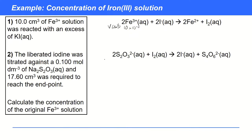For the second reaction, we know the concentration of sodium thiosulfate, which is 0.1 mol dm⁻³, and we have a certain volume — which I'll again write in dm³ by multiplying by 10⁻³, the same as dividing by 1000. The volume is 17.6 × 10⁻³ dm³. That's all the information we have from the question.